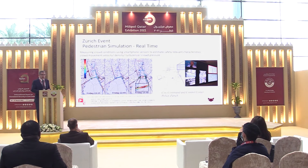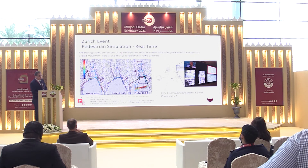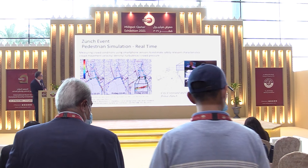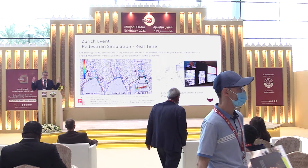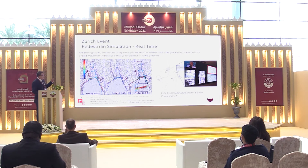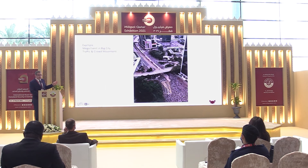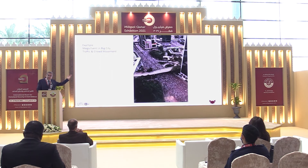One example is Zurich, Switzerland, where they organize big events with hundreds of thousands of people by measuring crowd conditions using smartphone sensors to estimate safety-driven characteristics like crowd movement velocity, density, turbulence, and crowd pressure. You can monitor the whole city at once and, due to real-time monitoring, zoom in on areas of high density and take the right measures to redirect flow or release the situation. Here is another example from Kuala Lumpur showing how people move — at times they keep streets only for pedestrians. The problem is not the movement itself but the destination: how to keep people safe when they arrive.